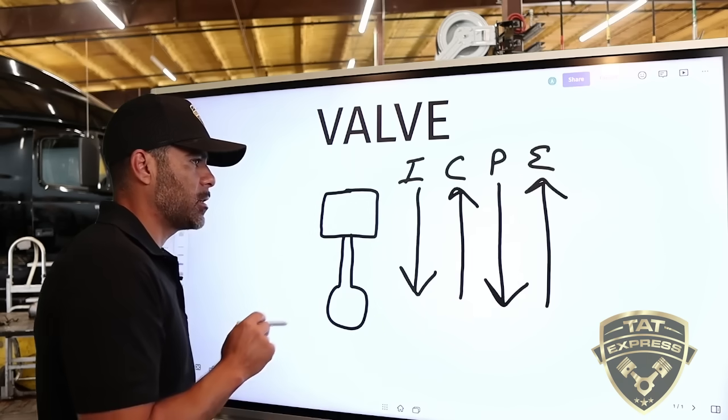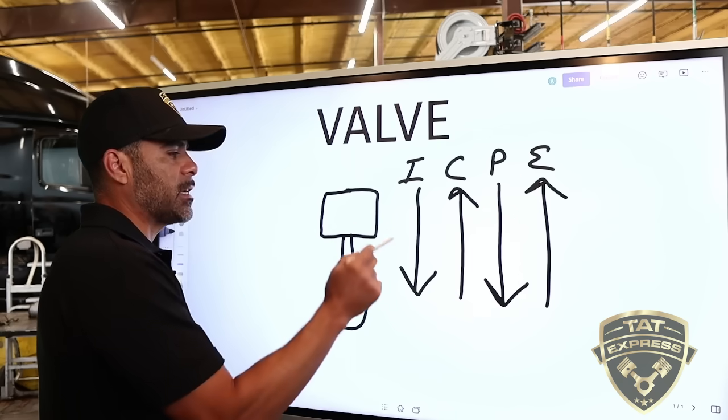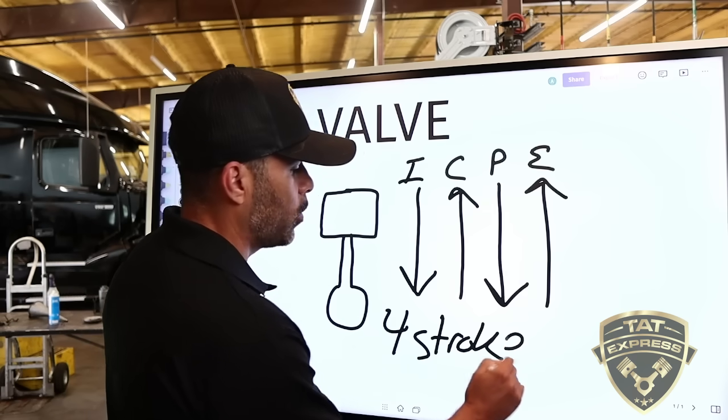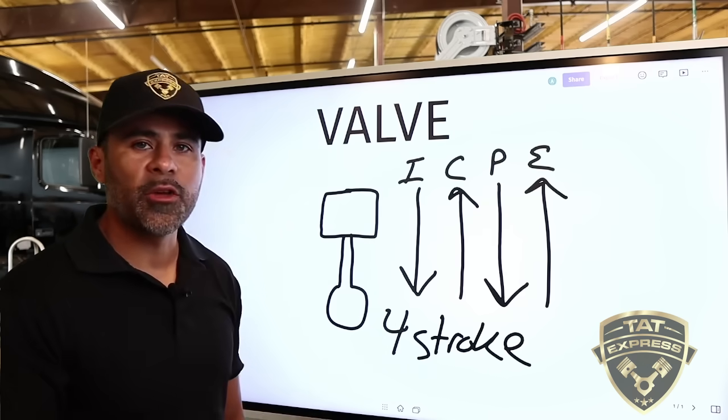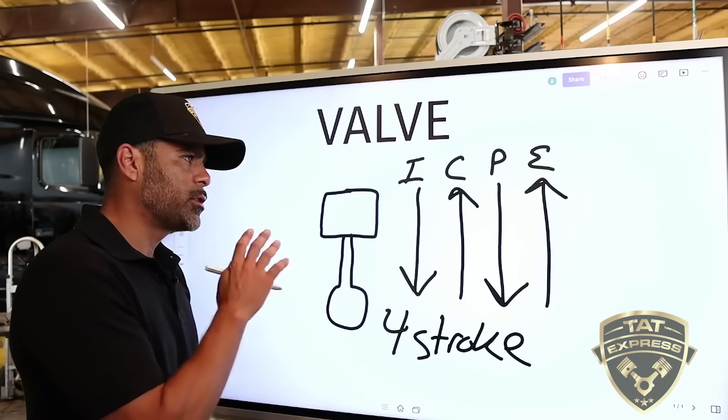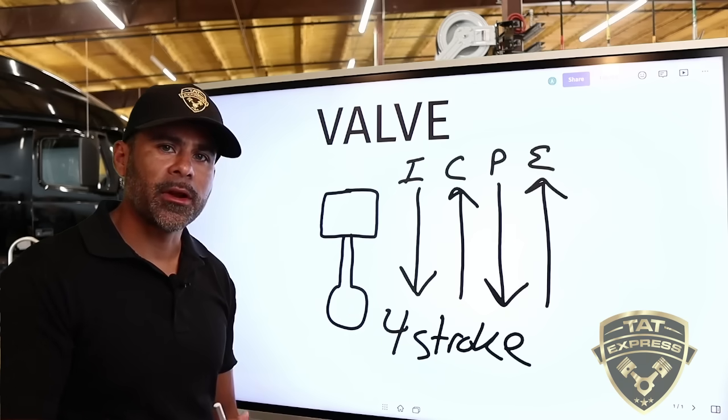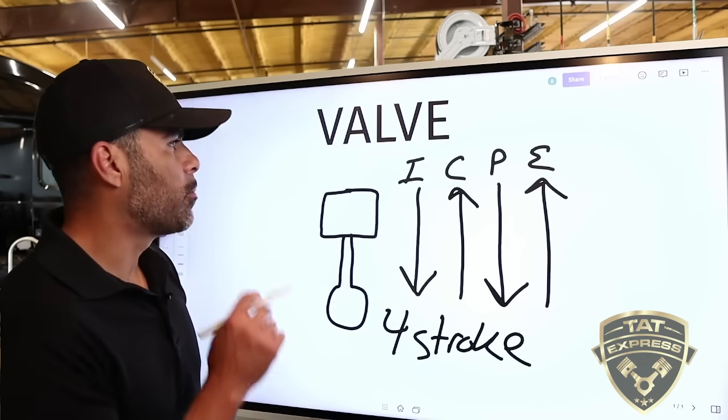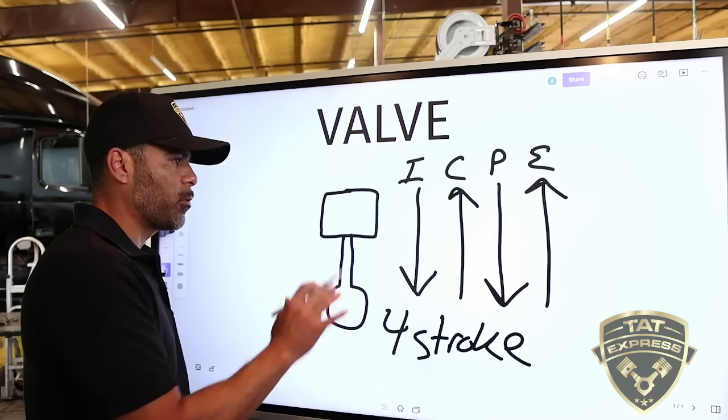This is the piston here. Now, it takes four strokes to complete one cycle. So this is why it's called a four-stroke engine. The only two-strokes that are going to be out there are the heavy ship motors. All semi trucks are going to be four-strokes.